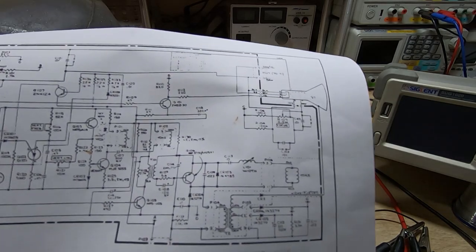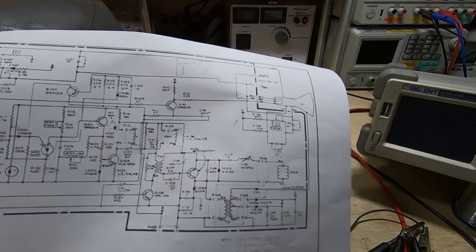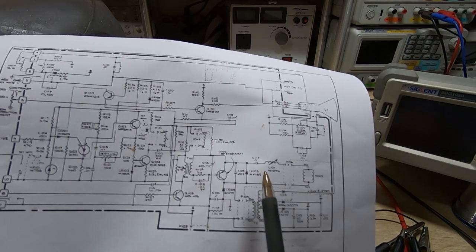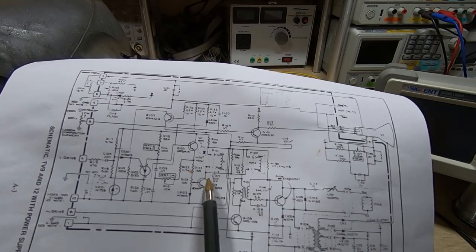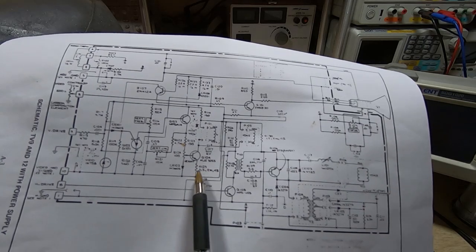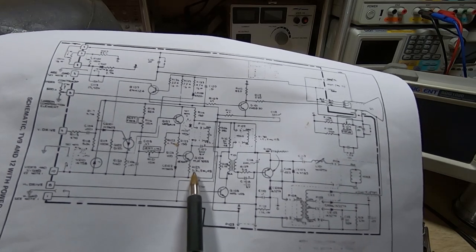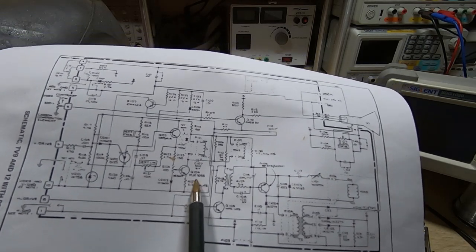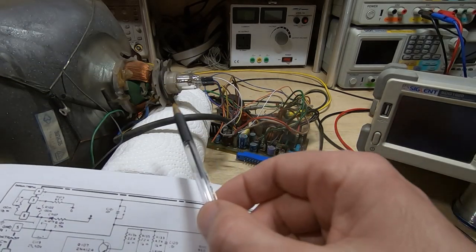So the first one I changed was for the height, and that's this resistor here. Now it says 3.3 ohms on the schematic, but it was actually 8.2 ohms. Like I said, it kind of depends on the tube that's fitted.